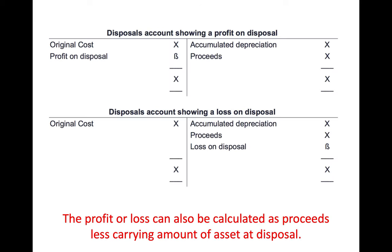The disposal account is shown as follows: on the left you have the original cost, and on the right you have the accumulated depreciation and proceeds. The balancing figure will be either the profit or the loss on disposal.